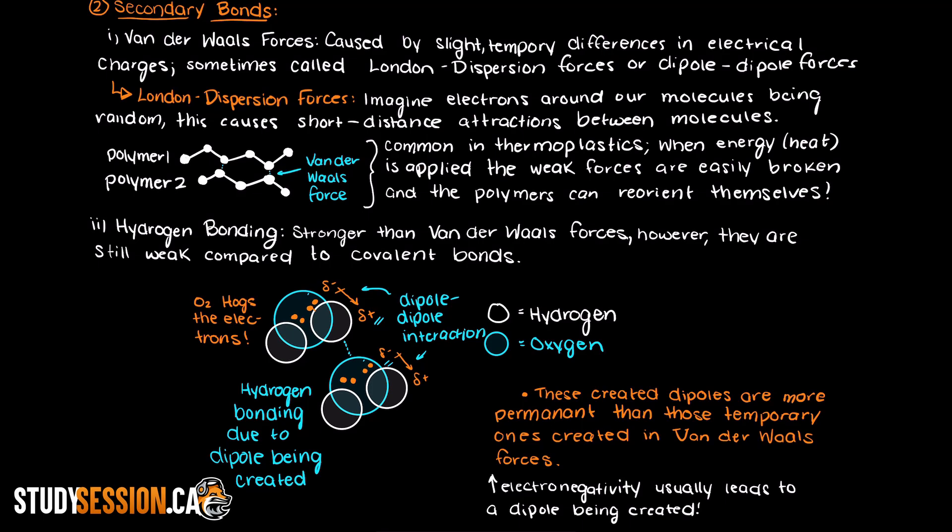In summary, we covered van der Waals forces, hydrogen bonding, and covalent bonding. To reiterate, covalent bonding is the strongest type of bond we will likely experience in polymer engineering. Then we have hydrogen bonding, and then van der Waals forces are the weakest of the three.